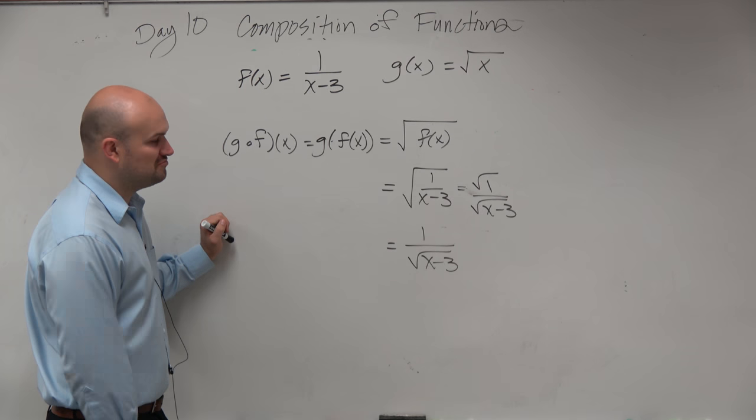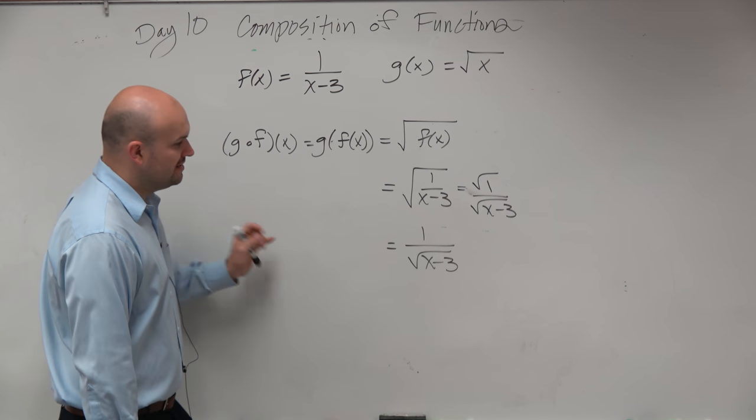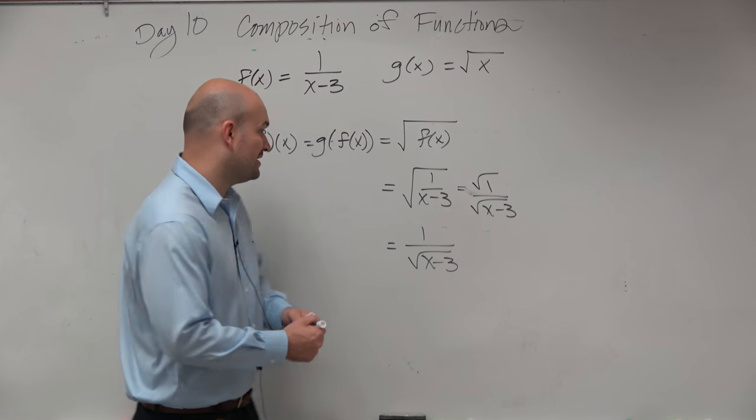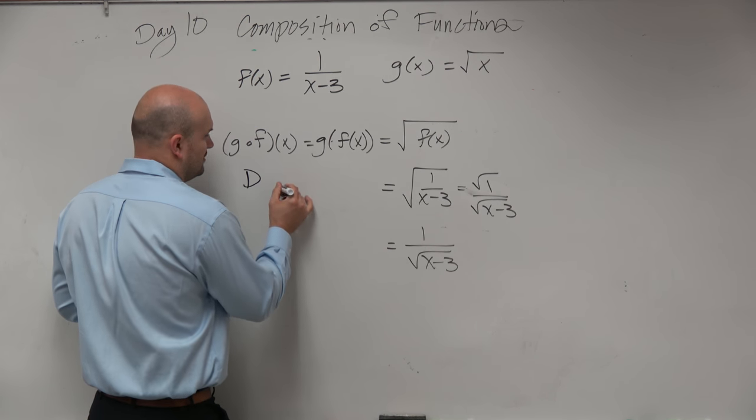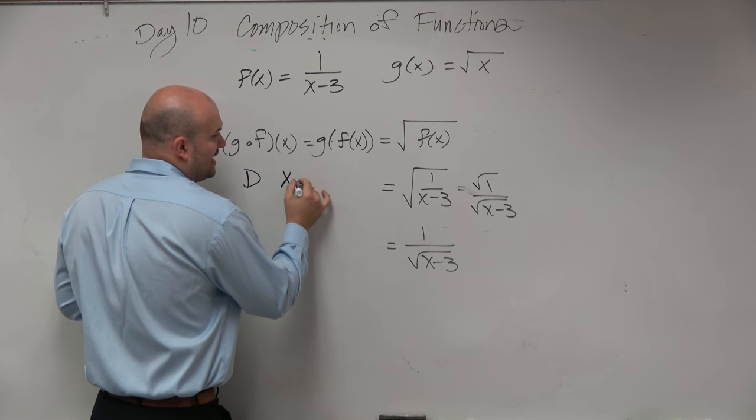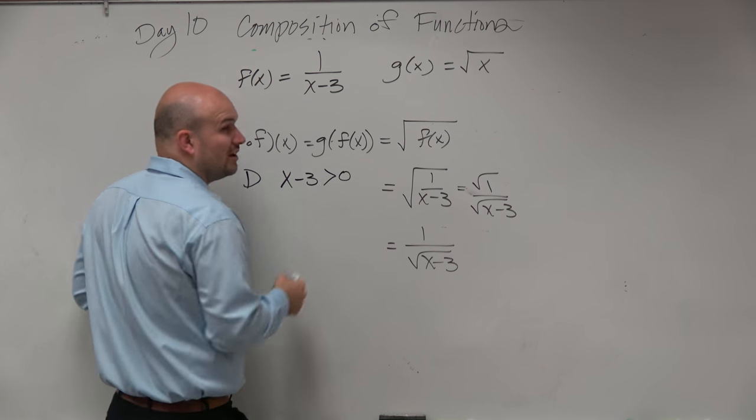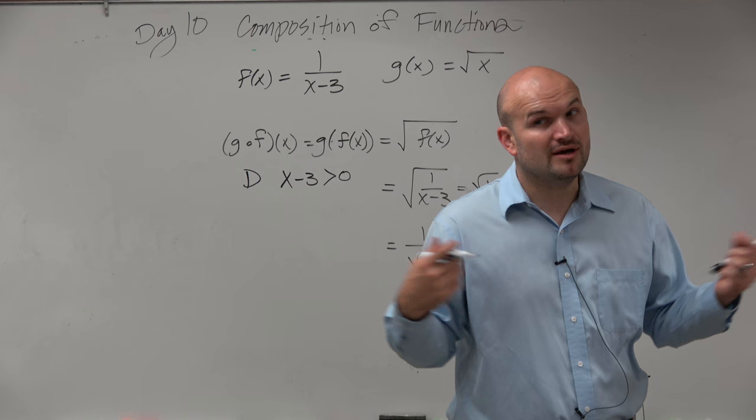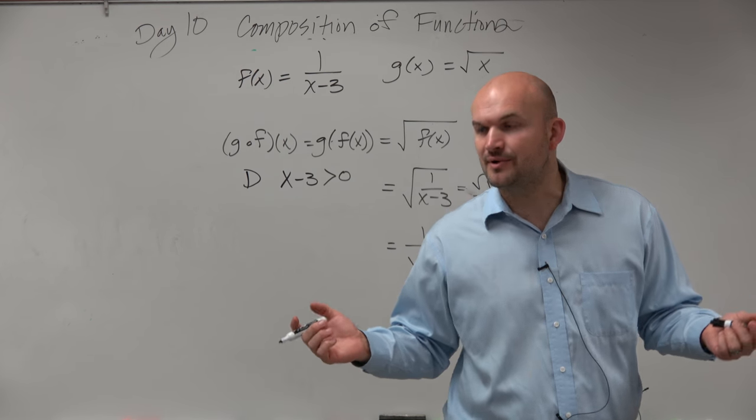So we look at this and say, what do we need to know? We know that this is under a radical and it's in a denominator. So whatever's under the radical, x minus 3 has to be greater than 0. I don't want it to be greater than or equal to, because if it's equal to, we have 0 in the denominator, which is not going to work.